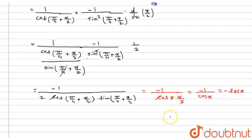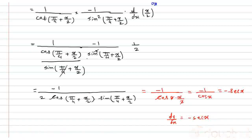So here I have got the answer: dy/dx is equal to minus sec(x). Here is the solution. I hope you will like the solution. Thank you.